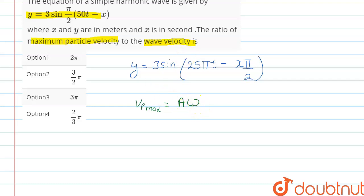Okay, so putting the values: amplitude is 3 and omega is 25π. Solving this, we will be getting 75π meters per second.